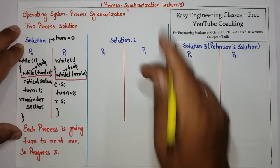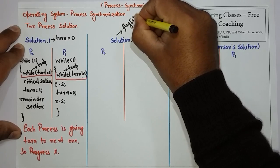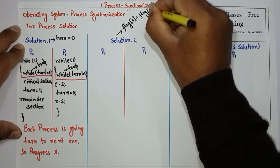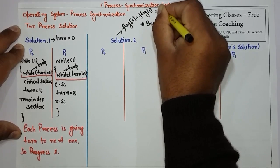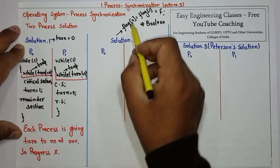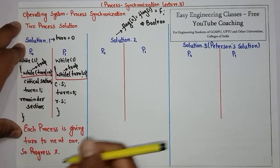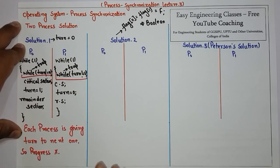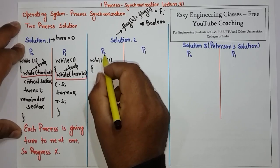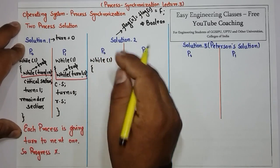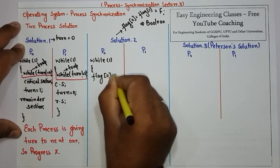The second solution uses the concept of a flag. Initially the flags of both processes are set to false — it is a boolean type variable, and both flag[0] and flag[1] are false, meaning no process wants to enter the critical section initially. When process P0 wants to enter the critical section, it makes flag[0] equal to true.